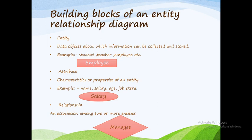For example, consider Department as one entity and Project as another entity — two different entities. Department manages Projects. So the relationship 'manages' connects the Department entity to the Project entity, and is represented diagrammatically by a diamond-shaped box, also called a rhombus.